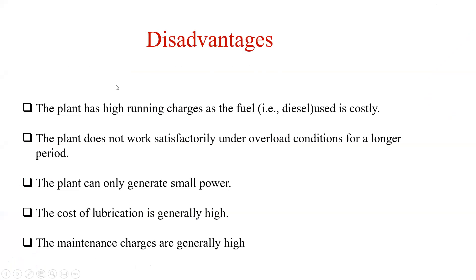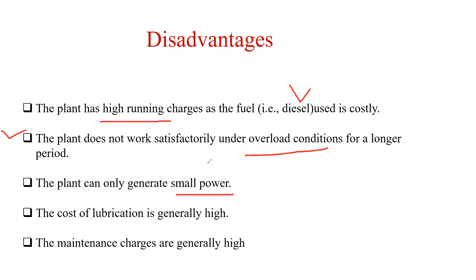In detail, the first disadvantage is the plant has a high running cost because the fuel is costly. The plant does not work satisfactorily under overload conditions. The plant can only generate small power — the power generation capacity is very low. The cost of lubrication is generally high — whatever lubrication is provided for the maintenance of your diesel engine, its cost is very high, and maintenance charges are generally high.